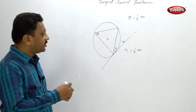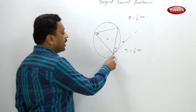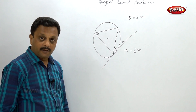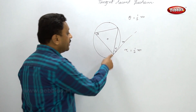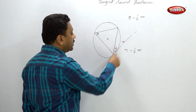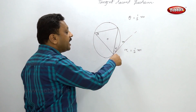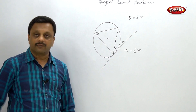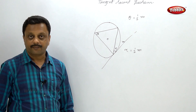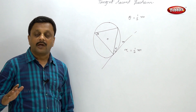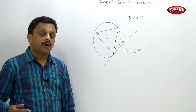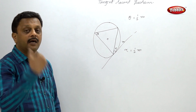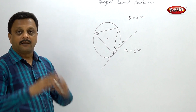If there is a tangent at a point and there is some chord, then whatever the major arc is, that arc and the angle are in a 1 to 2 ratio. Simple. And then the next part is the angles in alternate segment.